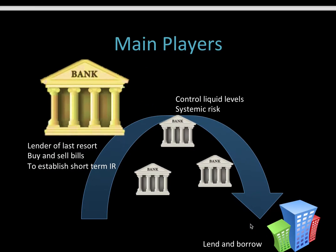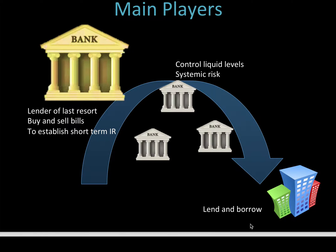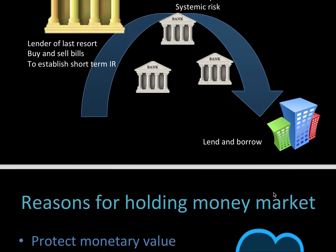Who are the main players in the money market? You've got your big bank — I think this is the reserve bank. They're the lenders of last resort. They buy and sell bills to establish the short-term interest rate. Then you have your commercial banks. They control the liquidity levels, and there is a little bit of systemic risk if one of them blows up. What they do is lend and borrow to companies.